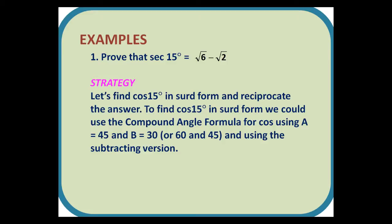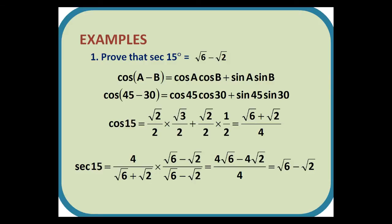To find cos 15° in surd form we could use the compound angle formula for cos using A is 45 and B is 30, or 60 and 45, using the subtracting version. So cos(A - B) = cos A cos B + sin A sin B. Replacing A with 45 and B with 30, we have cos 45 cos 30 + sin 45 sin 30. Cos 45 is √2/2. Cos 30 is √3/2. Sin 45 is also √2/2, and sin 30 is a half. Sticking it all together, √2 times √3 is √6, √2 times 1 is of course √2, and 2 times 2 is 4. So we get (√6 + √2)/4. When we reciprocate and get 4/(√6 + √2), we then rationalize the denominator using (√6 - √2)/(√6 - √2), which as you can see gives us a final answer at the end of √6 - √2.